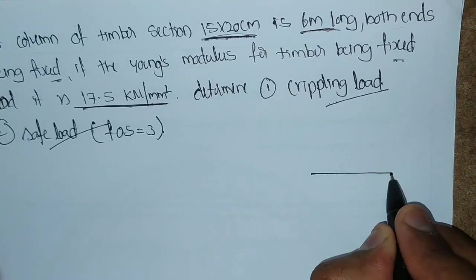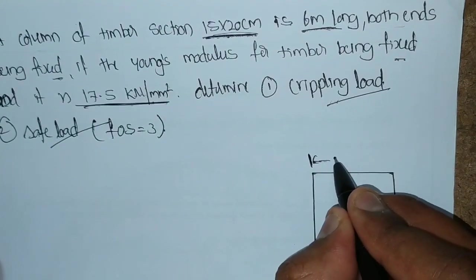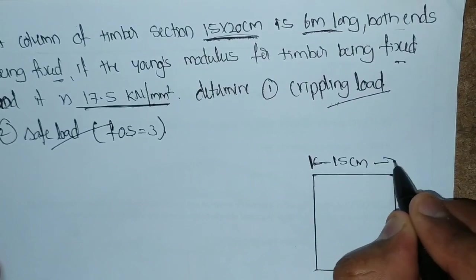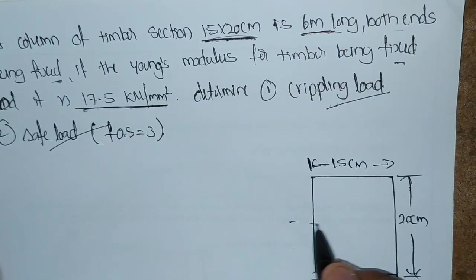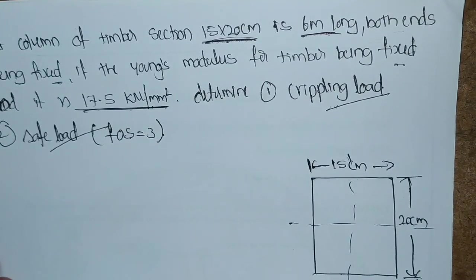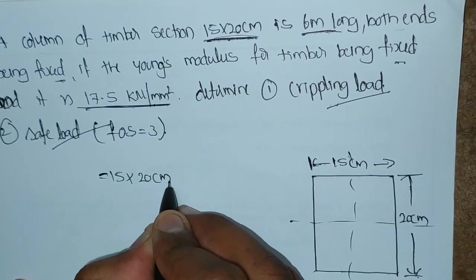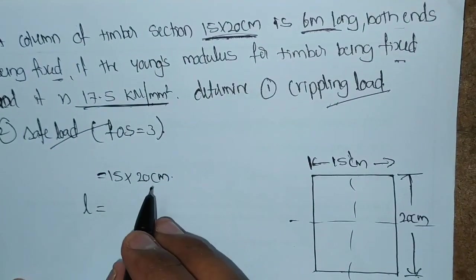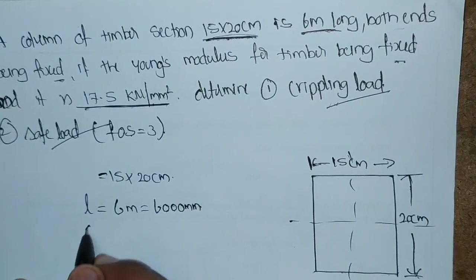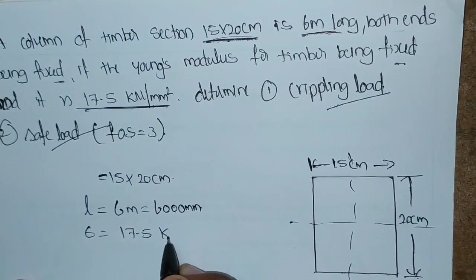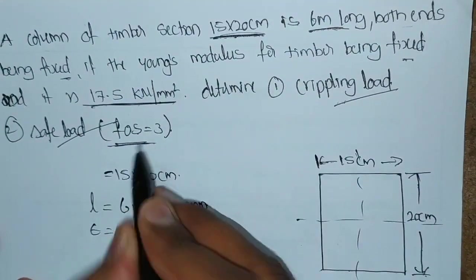The timber section is 15 by 20 centimeters. If you see the figure, this is the cross section of our timber beam - 15 centimeters and 20 centimeters. Young's modulus he has given as 17.5 kilo Newton per mm squared. The factor of safety is also given as 3. Now we have to find the crippling load and safe load.